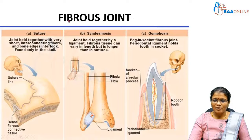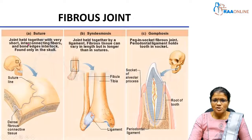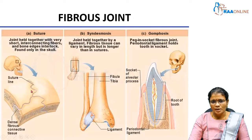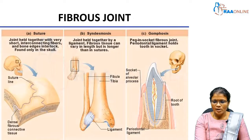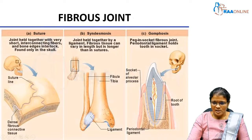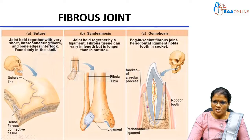Fibrous joints can be classified into three types: sutures, syndesmosis, and gomphosis. Sutures are joints held together with very short interconnecting fibers, and the bony edges interlock — a good example is found in the skull. In syndesmosis, the joints are held together by a ligament with longer fibrous tissue compared to sutures, and slight movement is present. Gomphosis is a peg-and-socket fibrous joint where the periodontal ligament holds the tooth in the socket. You can see the periodontal ligament between the tooth and the bone.